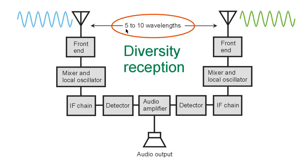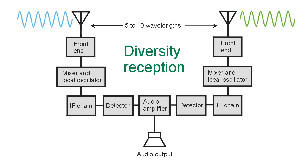So if you're talking 5 to 10 wavelengths, you're talking 150 to 300 meters, and in feet that's about 500 to 1,000 feet — quite a long distance that you have to put these two antennas apart from each other in order to take advantage of diversity reception.